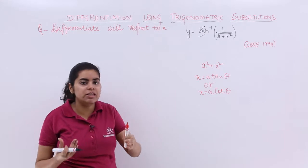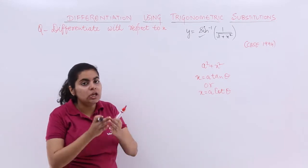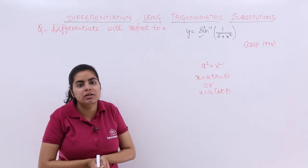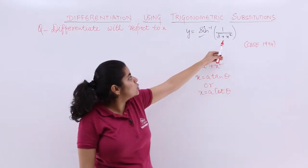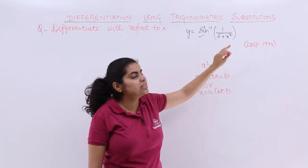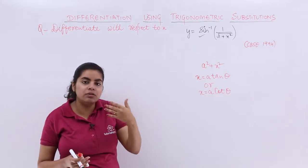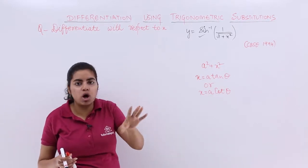Now cosecant is the reciprocal of sin, so definitely my motto would be to get cosecant or cosecant inverse in some manner. If I substitute tan θ in place of x, it will become 1 + tan² θ, which will become sec² θ, and upon reciprocal it will be related to cos and not sin.